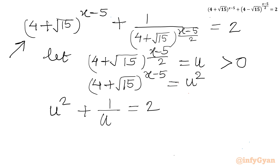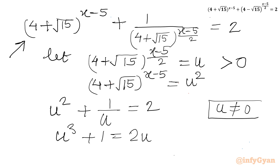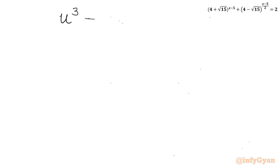So we can write our equation as u² + 1/u = 2. Now multiply this equation by u (since u cannot be 0, it is an exponential function), giving u³ + 1 = 2u. Taking all terms to one side: u³ − 2u + 1 = 0. This is a cubic equation.